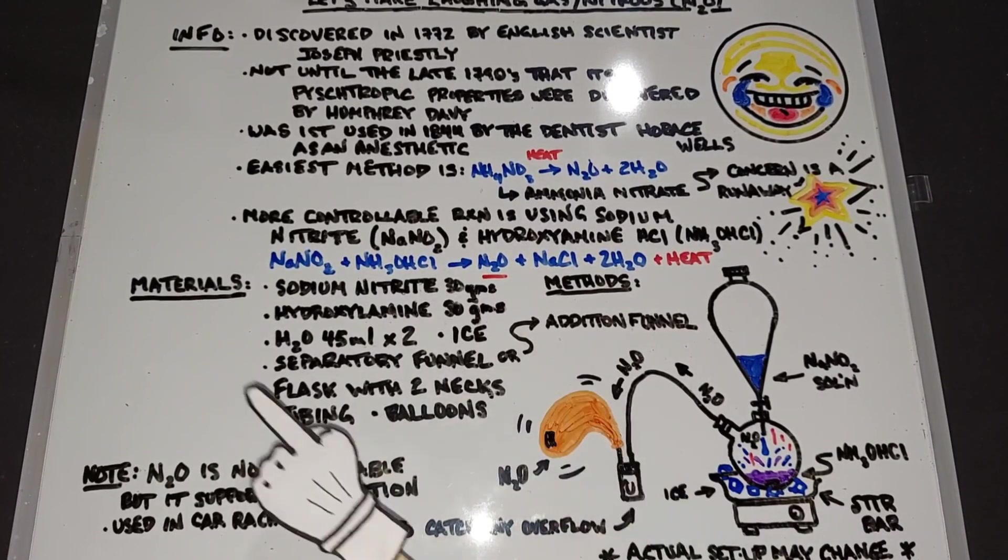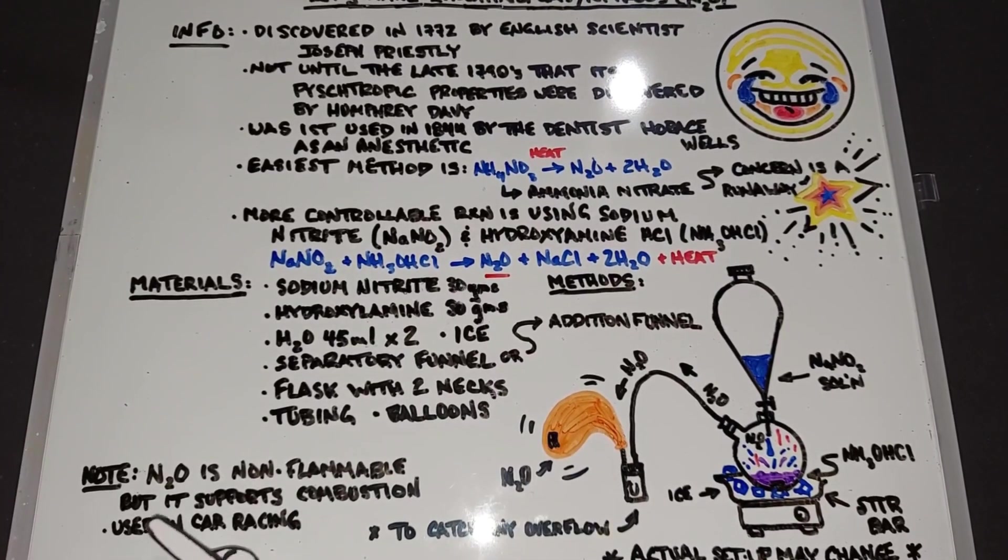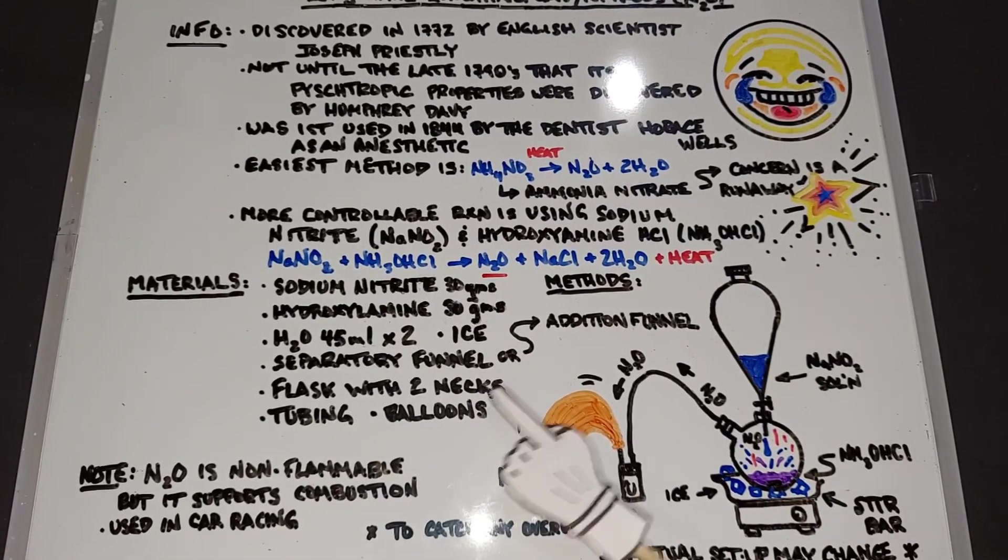We'll need some tubing and some balloons to collect the nitrous. A quick note: nitrous is non-flammable but it does support combustion a lot like oxygen does, so it is used in car racing.